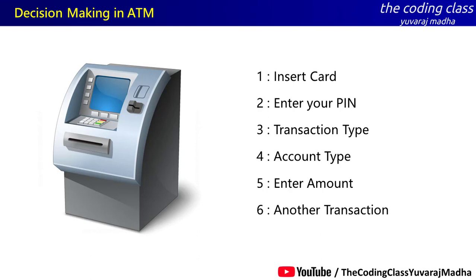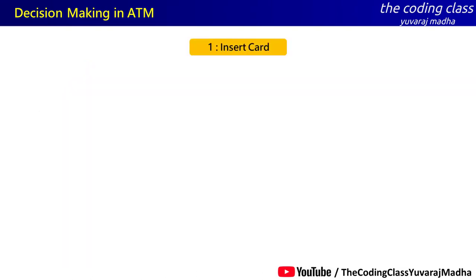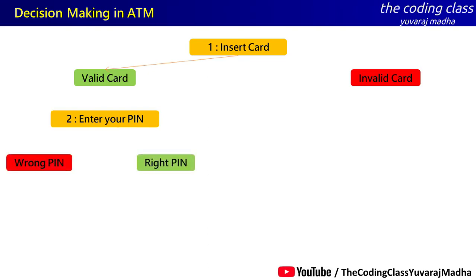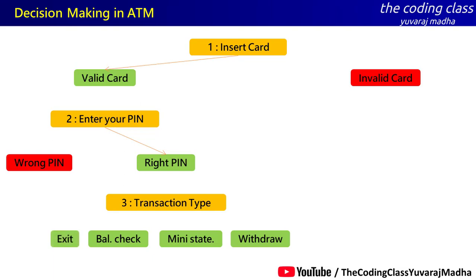I will implement this using a C program. The card will be checked as valid or invalid. Suppose it is valid — this statement will execute. The CPU decides to run the code. You enter the PIN, and the PIN is checked as wrong or right. If the PIN is wrong, those statements are ignored. If the PIN is right, you proceed to the transaction type, balance check, or exit — each is a block of code.